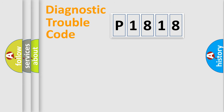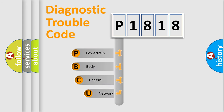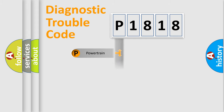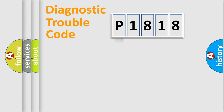Let's do this. First, let's look at the history of diagnostic fault code composition according to the OBD2 protocol, which is unified for all automakers since 2000. We divide the electric system of an automobile into four basic units: Powertrain, Body, Chassis, and Network. This distribution is defined in the first character of the code.